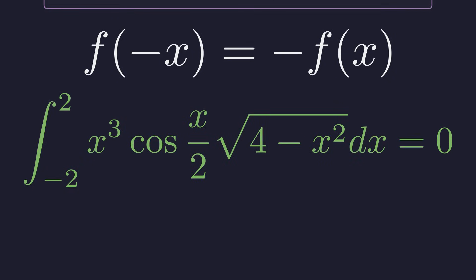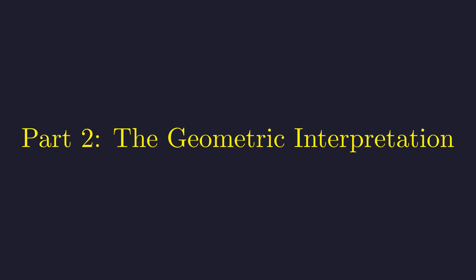Which means this entire integral is just zero. All that complexity and it vanishes. Now let's look at the second integral—there's a familiar geometric shape hiding in here.